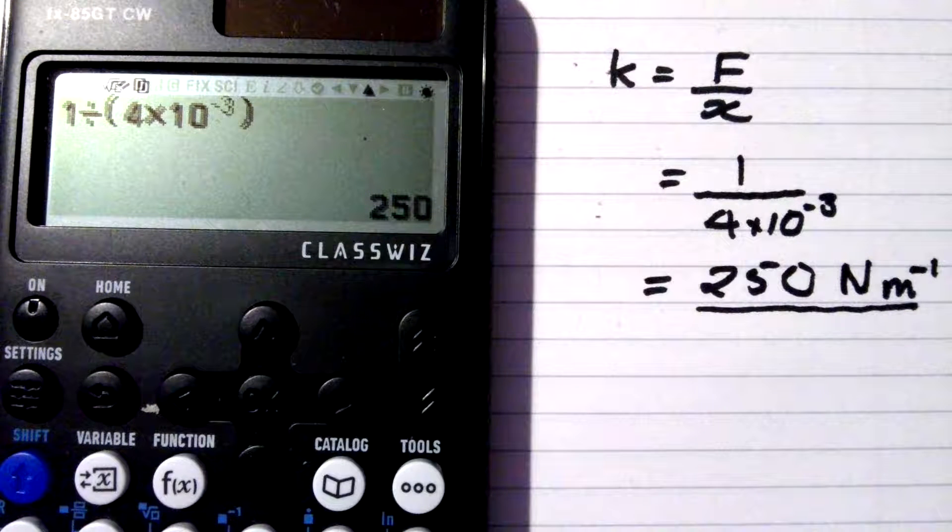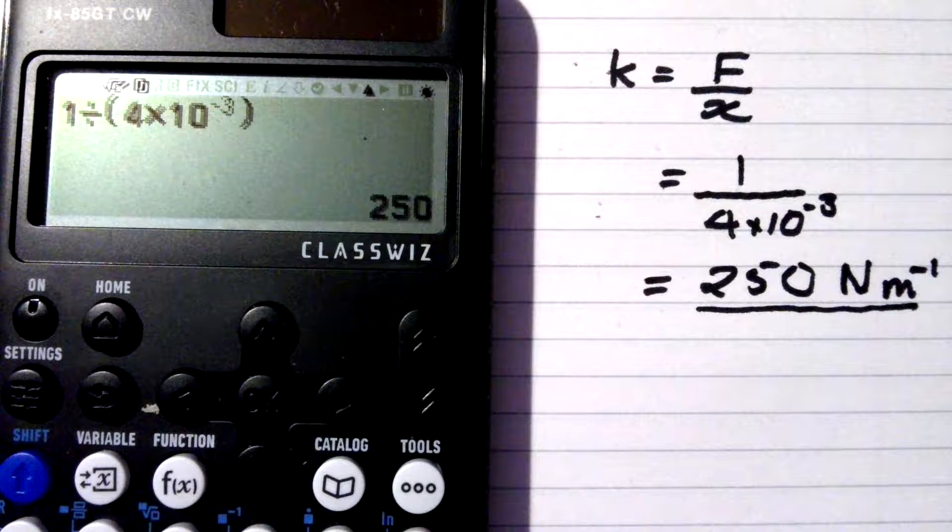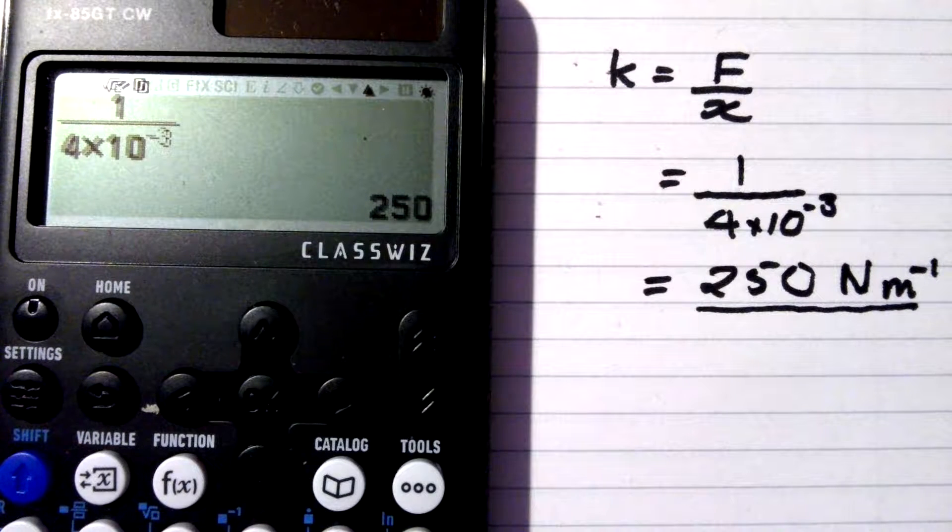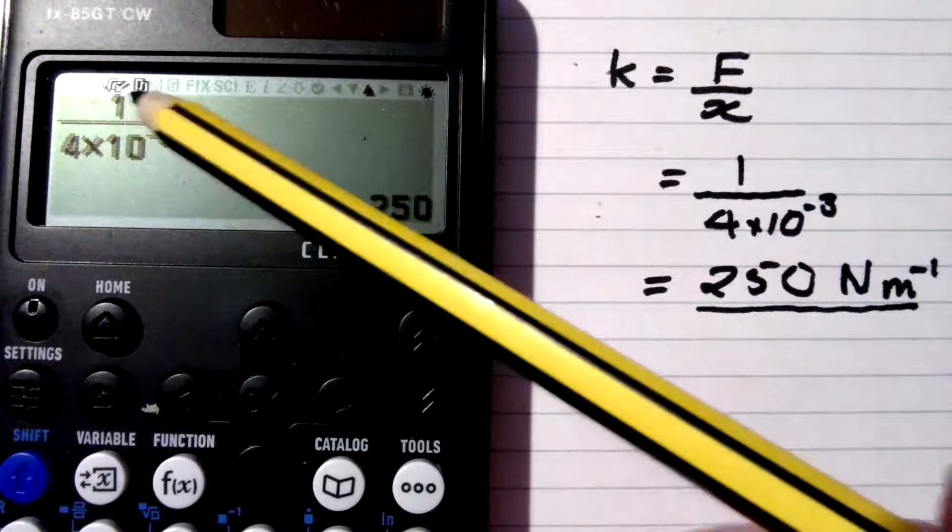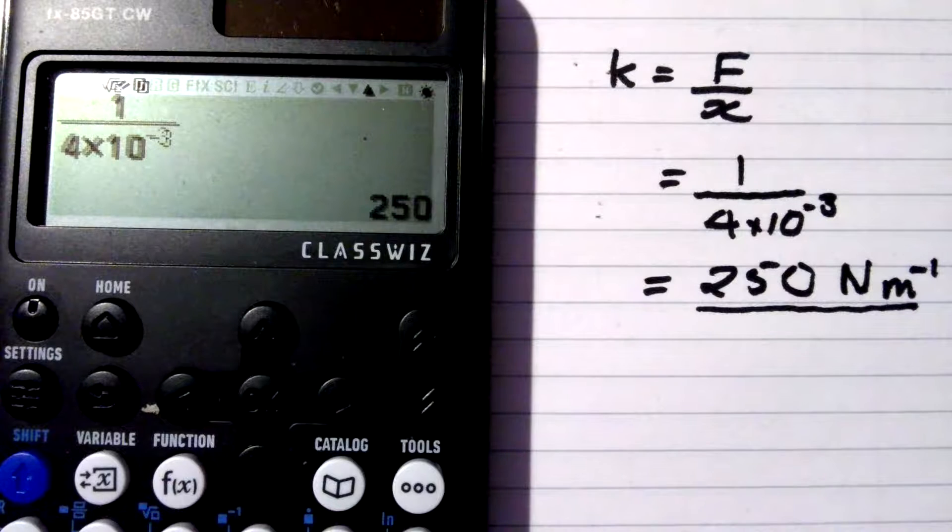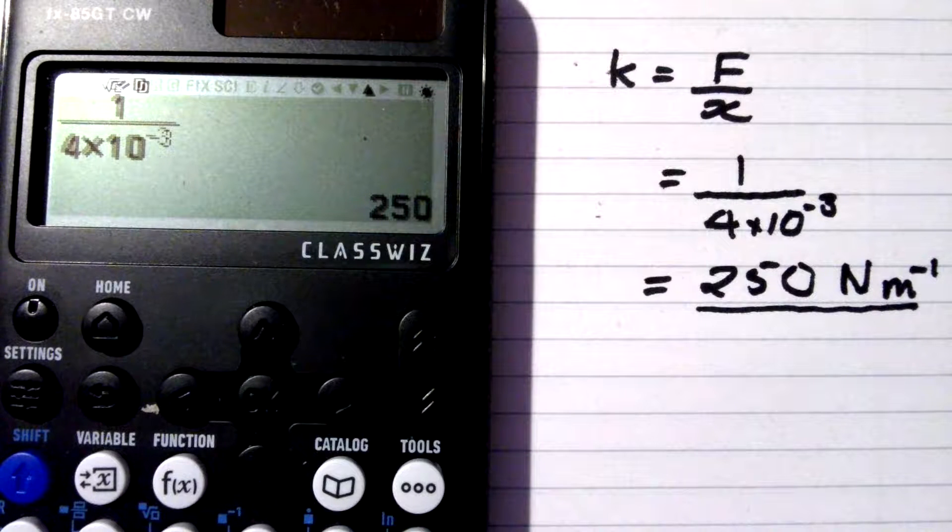Another workaround is to do it as a fraction. There you go. Same calculation, but this time written as 1 over 4 times 10 to the negative 3. And it gives the correct answer.